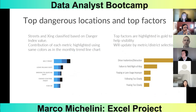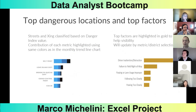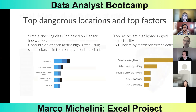In the dashboard, we have identified the streets and crossings, classifying them based on their danger index and highlighting the contribution of each metric. For example, Grand Central Parkway had a higher number of deaths, so it is ranked above Franklin Delano Roosevelt Drive because of its higher risk on the danger index. The top factors have been highlighted in a different color to draw attention to the main factor for each situation.